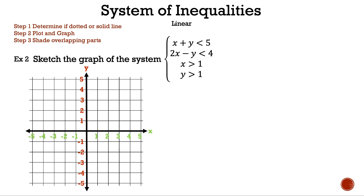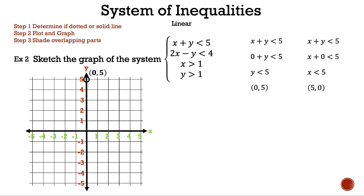We're going to go through the graph of each line a bit faster than normal. If we need to go through that part slower, there are videos below. Let's start with x plus y is less than 5. We pick 0 for x and solve for y — our result is y is less than 5, so our first point is (0, 5). We pick 0 for y and solve for x — our result is x is less than 5, so our second point is (5, 0). Now let's draw our line. Why do we think we have a dotted line? That is correct — we only have less than; the inequality x plus y is less than 5 does not have or equal to.